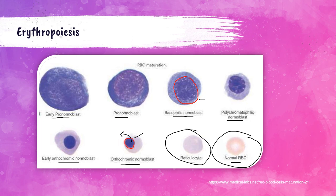The reticulocyte and the normal red blood cell look very similar to each other. The only real difference is that the reticulocyte is slightly larger and has a slightly different color. Retics — as we call them — when seen in the blood, the condition is called polychromasia. We'll discuss that more as we go through the presentation.